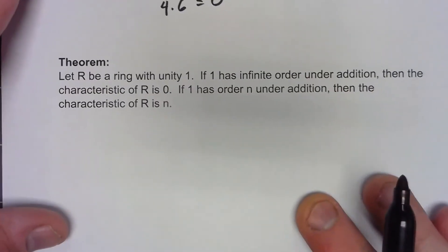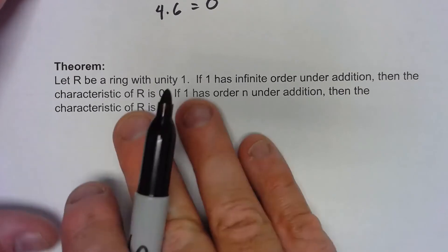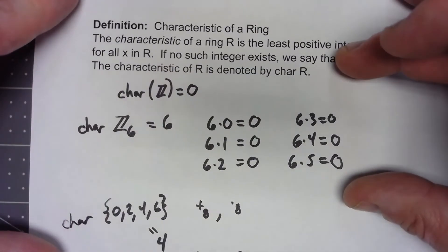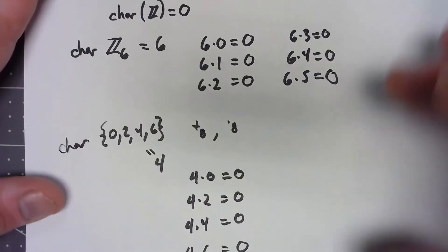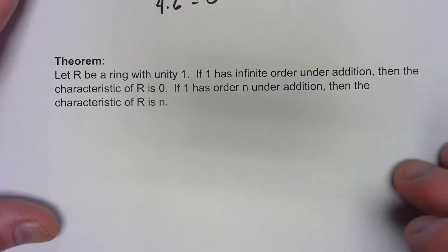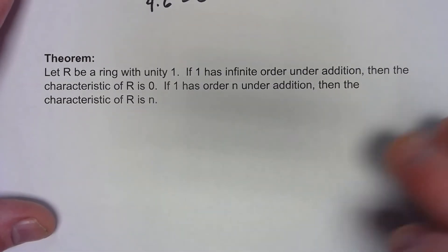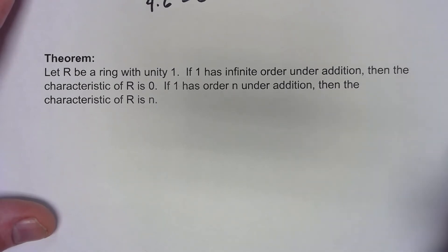Now let's prove a little theorem about this. So we have a ring that has a unity. So both of these up here would be it, but it wouldn't apply to this one here because that doesn't have a unity. If 1 has infinite order, then the characteristic of that ring is 0. But if it has a finite order for 1, then the characteristic of the ring is just that characteristic.